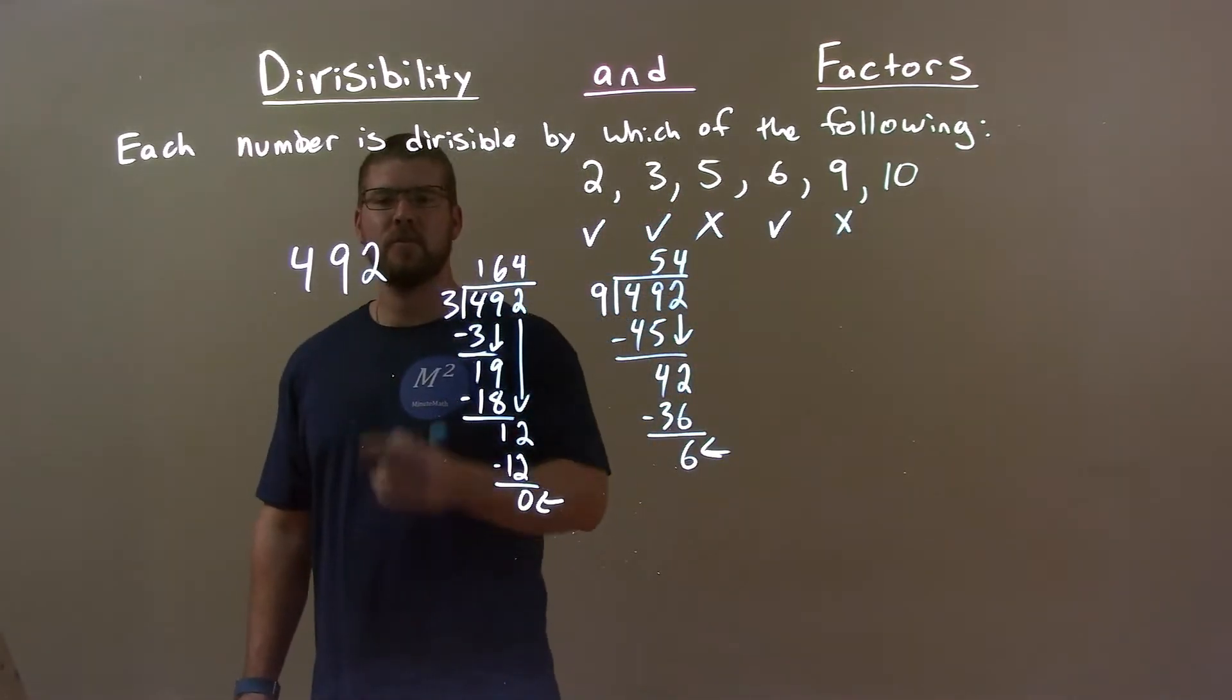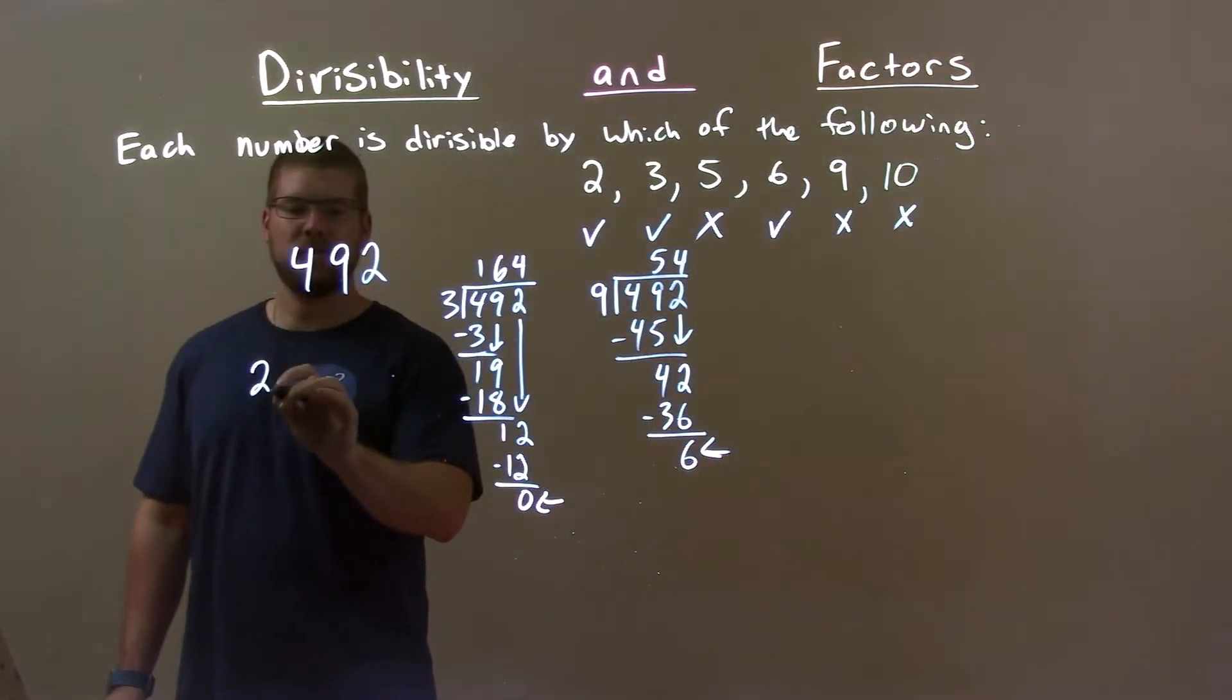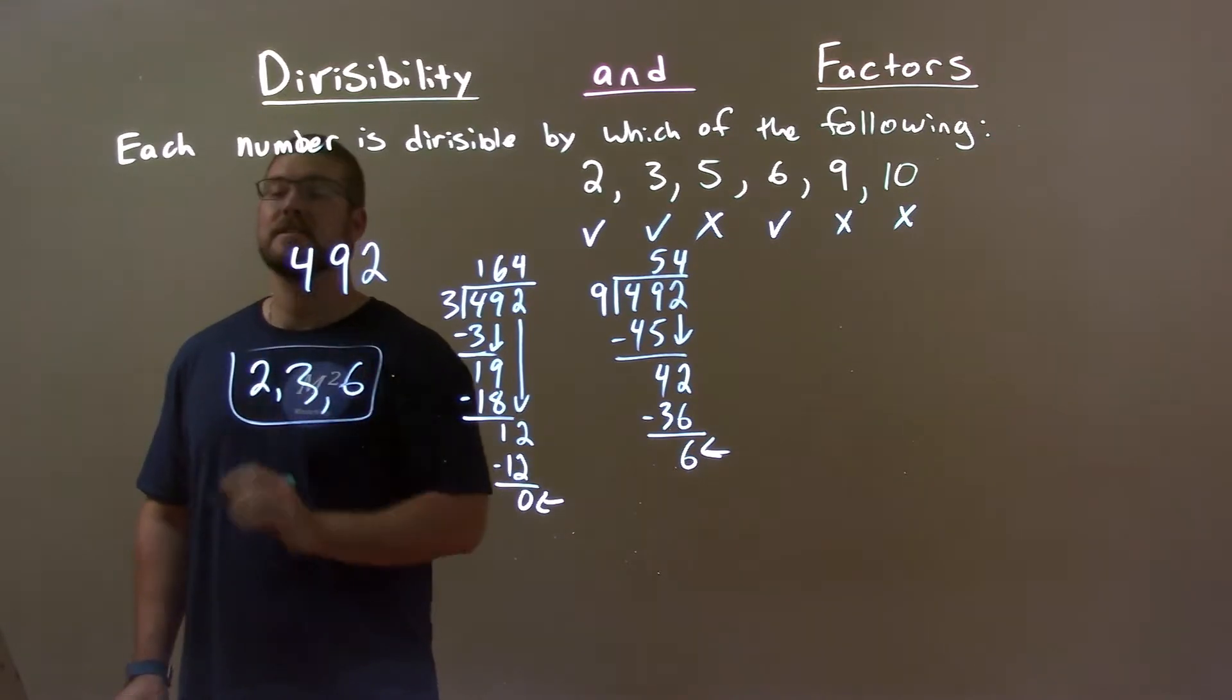This number, 492, does not end in a 0. So, 10 is out. So, our only answers here are 2, 3, and 6.